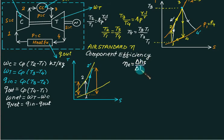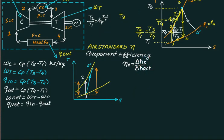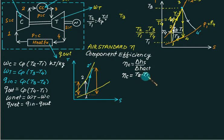Efficiency is the smaller value divided by the larger value — theoretical over actual. For ideal gases, delta-h_s can be written as cp multiplied by (T2 - T1). Since cp cancels with the denominator, the formula for compressor isentropic efficiency becomes (T2 - T1) divided by (T2-dash minus T1).